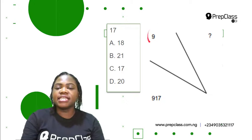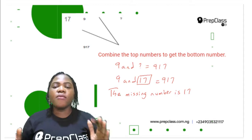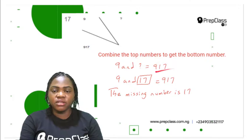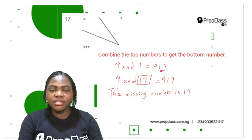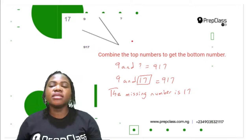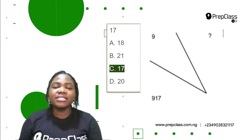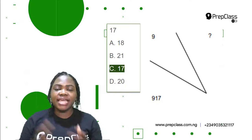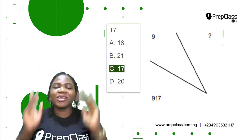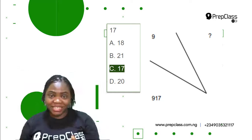Let's move on to Question 17. 9 is the given top number, there is a missing top number, and the given bottom number is 917. Remember from the samples: combine the top numbers to get the bottom number. The top number given is 9, and the missing number combined with 9 gives 917 — so the missing number is 17. 9 and 17 combined gives 917. The correct option is C, 17.